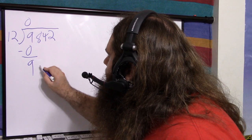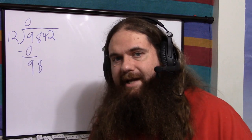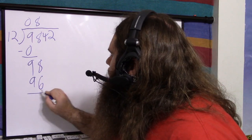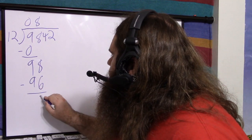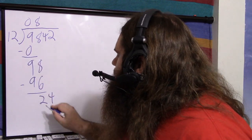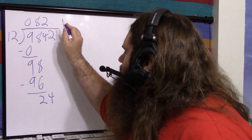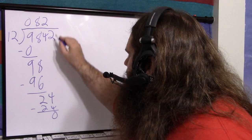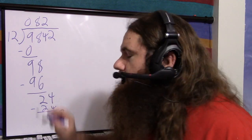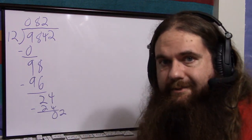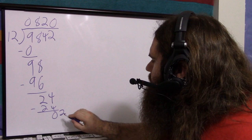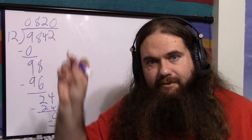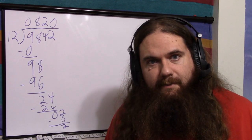Now we bring down the 8. How many times does 12 go into 98? 8 times. What is 8 times 12? 96. 98 minus 96 is 2. Bring down the 4. How many times does 12 go into 24? It goes 2. 2 times 12 is 24. Subtract — that's a remainder of 0. Bring down the 2. How many times does 12 go into 2? That's 0. So 0 times 12 is 0. Subtract, and we're left with 2.